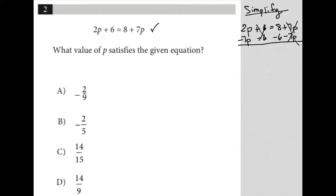So 2p minus 7p is negative 5p, and 8 minus 6 is positive 2. So to isolate p, I can divide both sides by negative 5, and I'm left with p is equal to negative 2 fifths, and therefore the correct answer here is choice B.